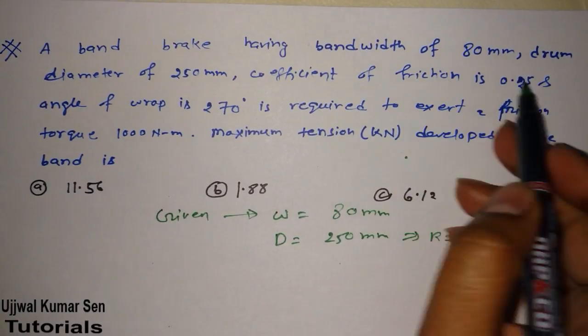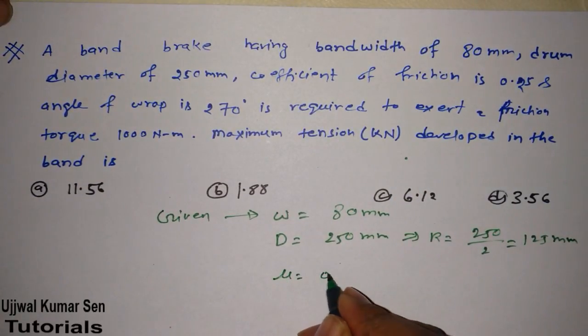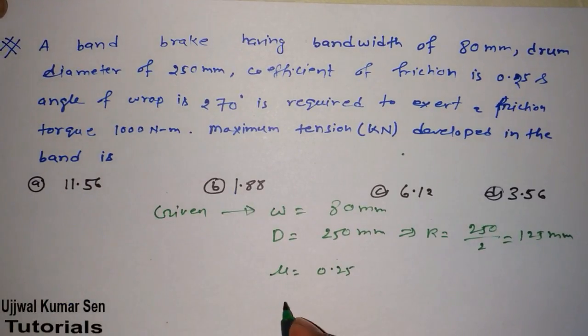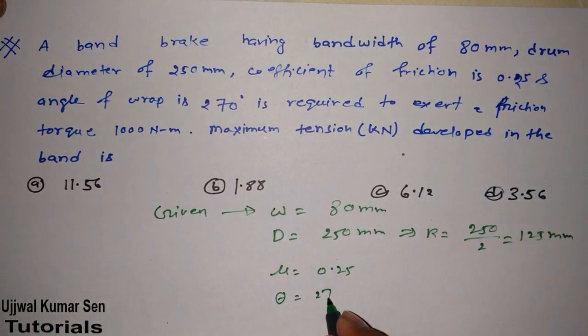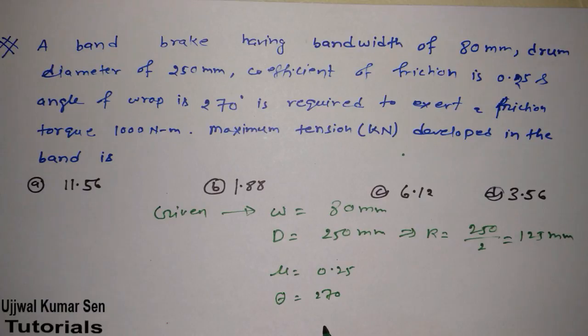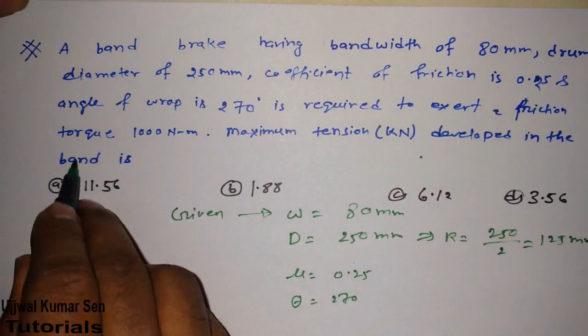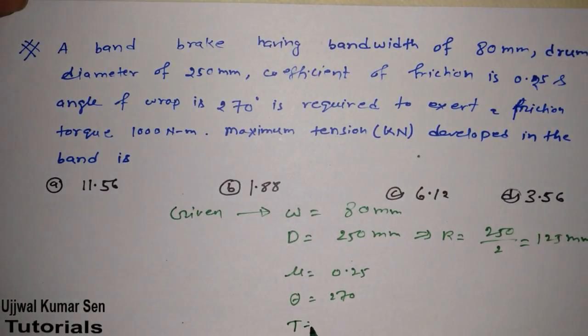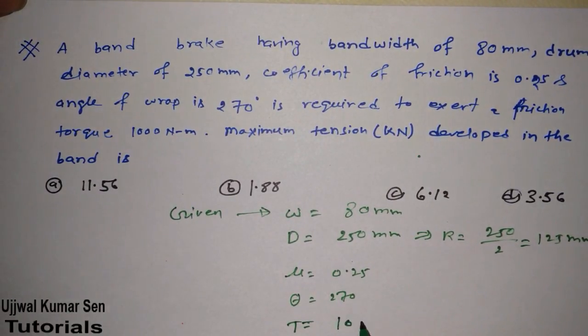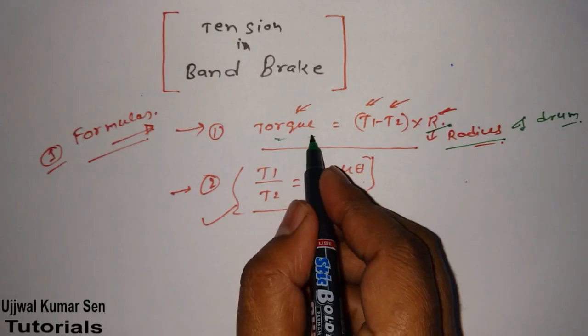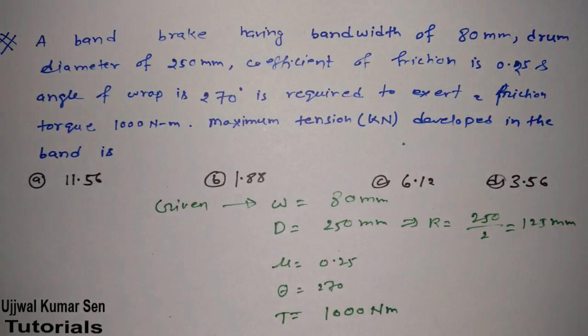Now coefficient of friction we have given is 0.25 and angle of wrap theta is 270 degrees. Is required to exert a friction torque. So this torque is given is 1000 Nm. They have given 1000 Nm. Now maximum tension developed in the band is. So we have to find out T1.